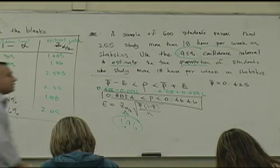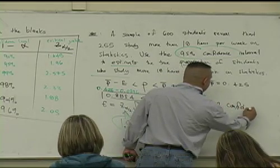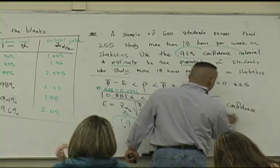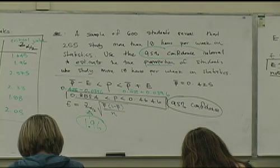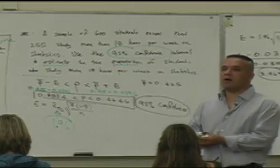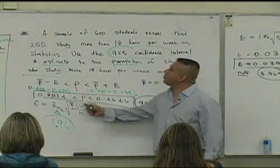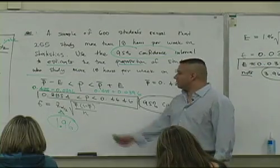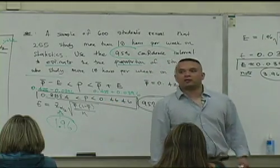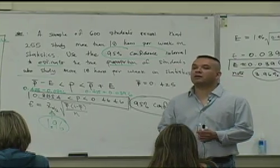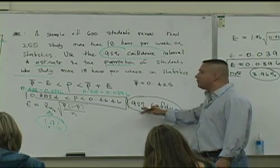So here's the story. And this is how it works. I'm cutting to the chase because of time. But there's a lot more theoretical information going on here. But this is what it means. It means that the true proportion of students that study more than 18 hours per week on statistics is somewhere between 38.54% and 46.46%. The true proportion is somewhere between those two values. Now, we're saying that with 95% confidence. We have to talk about what this means.